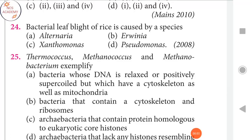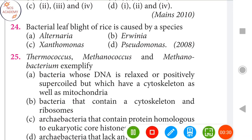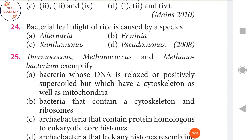Welcome to NCS Academy. We'll be discussing biology questions on biological classifications, covering previous year questions. Bacterial leaf blight of rice is caused by a bacterial species. The right answer is Xanthomonas.